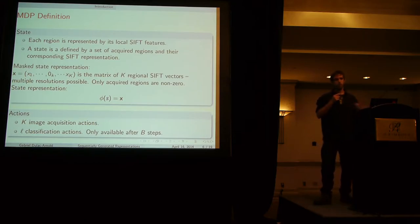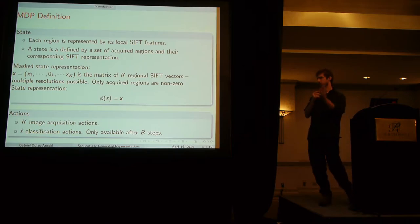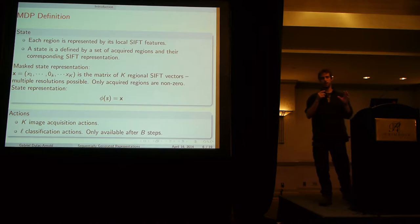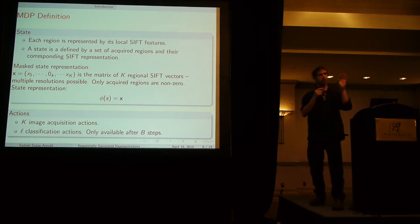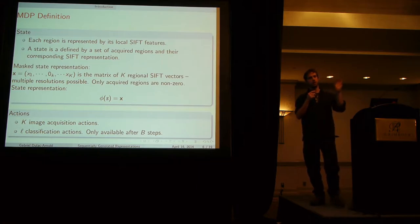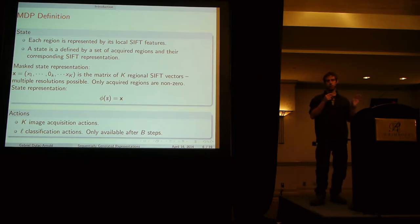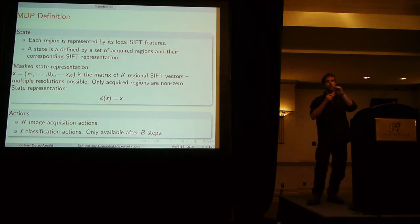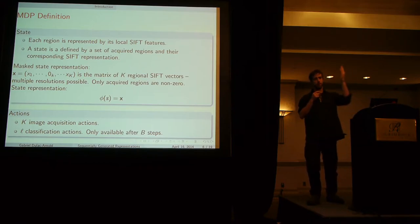There's kind of two big ways to represent the state. We have the MDP, we have the states and the actions. The state here is the set of regions represented by the local SIFT regions. Each region has a local SIFT descriptor which is bag of words. Our state, phi of s, is this matrix x which for each row is the bag of words for that region. We have k regions, we have k rows in our matrix and each row is the bag of words SIFT descriptor for that region.